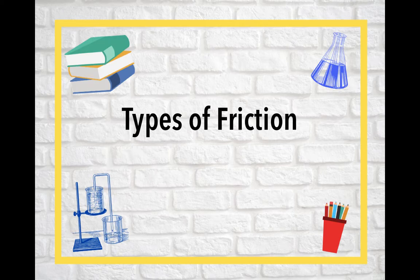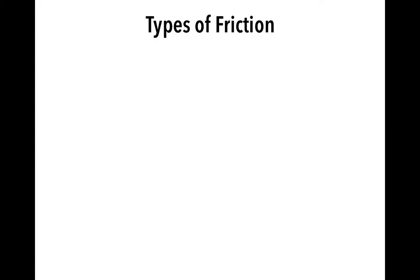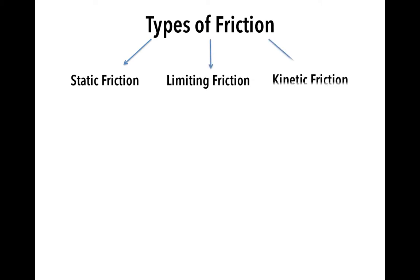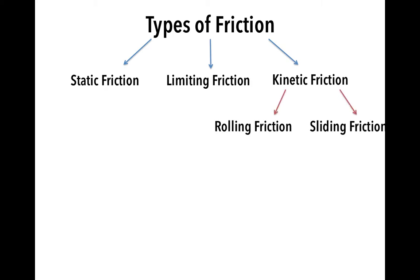Today, we are going to be talking about types of friction. The types of friction are static friction, limiting friction, and kinetic friction. There are two subtypes of kinetic friction: rolling friction and sliding friction.